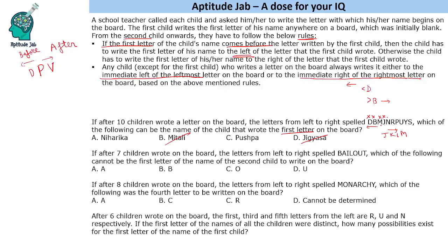Now let's look at N. On the left-hand side, all the letters come before N in the alphabet, and all the letters on the right come after N — so N would be the first child. Checking P: R comes after P and should be on the right, but it is not, so P is eliminated. That means the answer is Niharika. We could have used the options directly, but it was important to understand the concept.